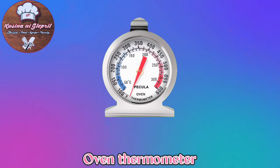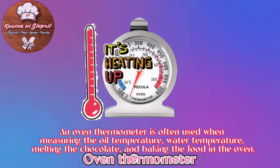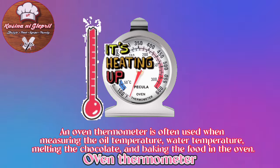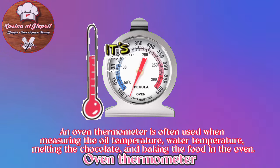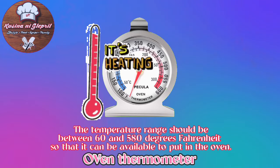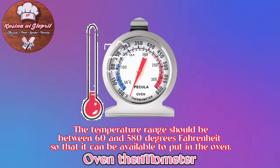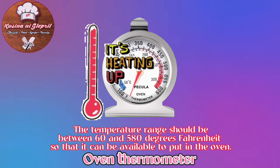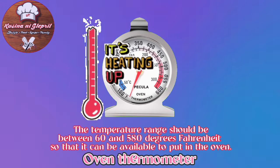Oven Thermometer: An oven thermometer is often used when measuring oil temperature, water temperature, melting chocolate, and baking food in the oven. The temperature range should be between 60 and 580 degrees Fahrenheit, so that it can be used inside the oven.